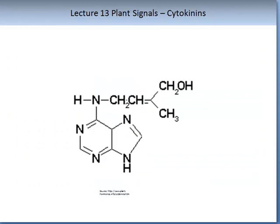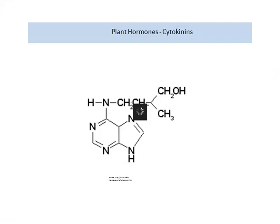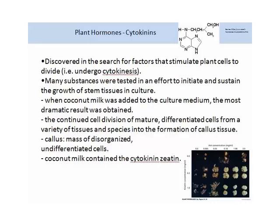This brings us to the end of the GA section. Now we will look at the plant hormones called the cytokinins. The illustration on your screen is the chemical structure of a cytokinin. They were discovered in the search for factors that stimulate plant cells to divide — a process called cytokinesis. Many substances were tested in an effort to initiate and sustain the growth of stem tissues in culture. When coconut milk was added to the culture medium, the most dramatic result was obtained.